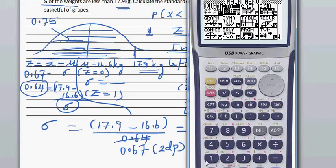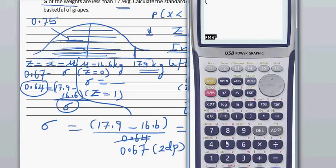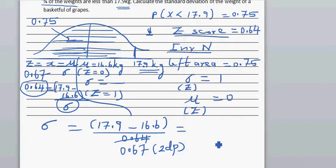So the answer: go to the run menu. Again, I will do 17.9 minus 16.6 divided by 0.67, which is 1.94. So the standard deviation is 1.94 kg.